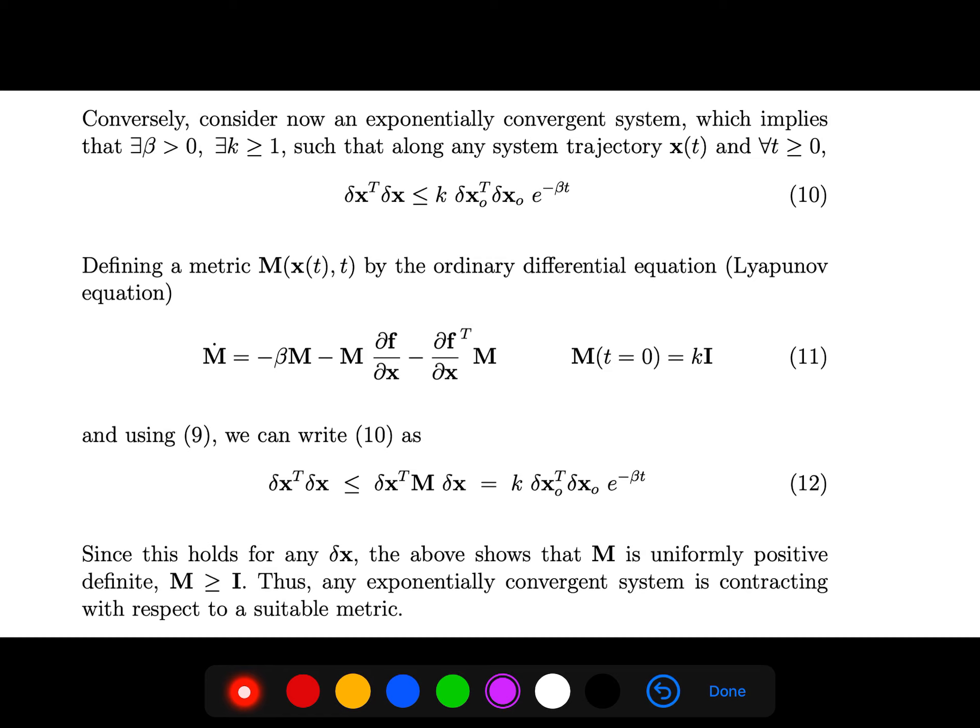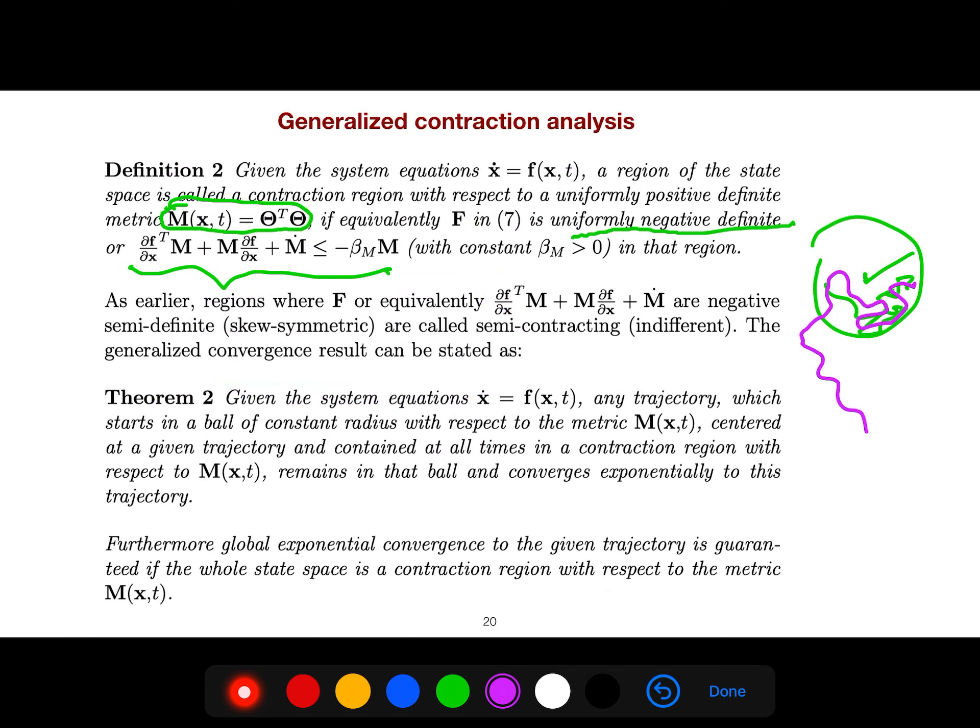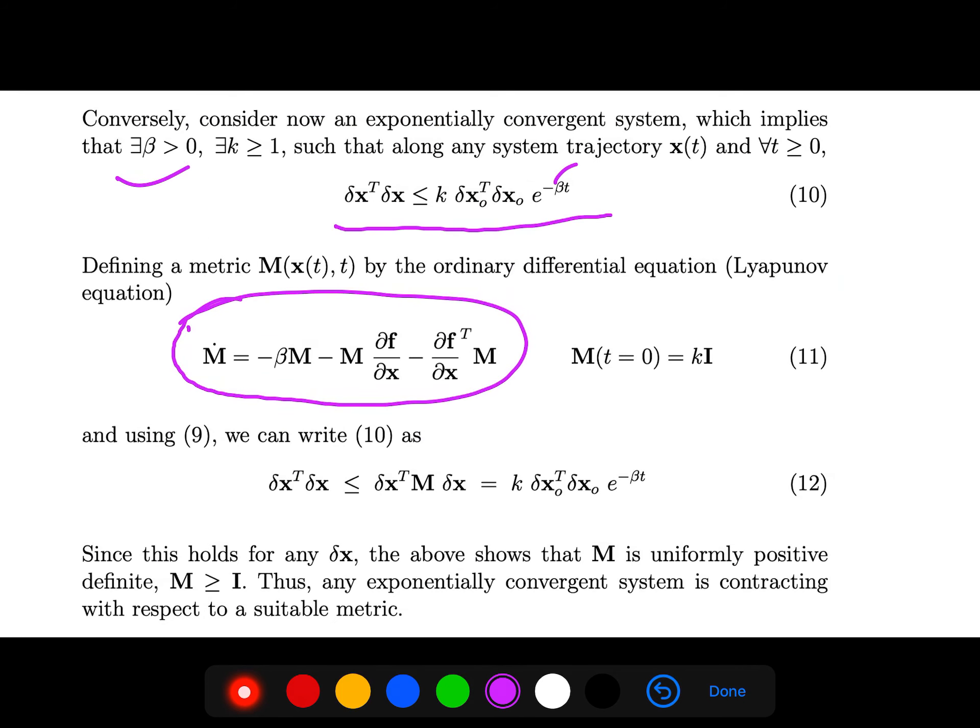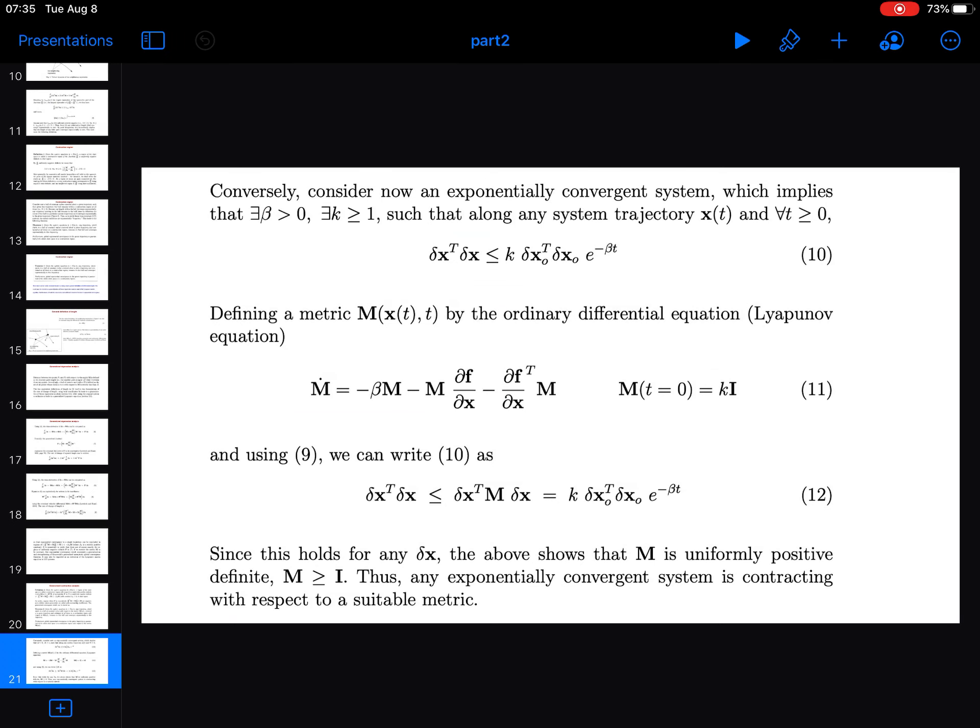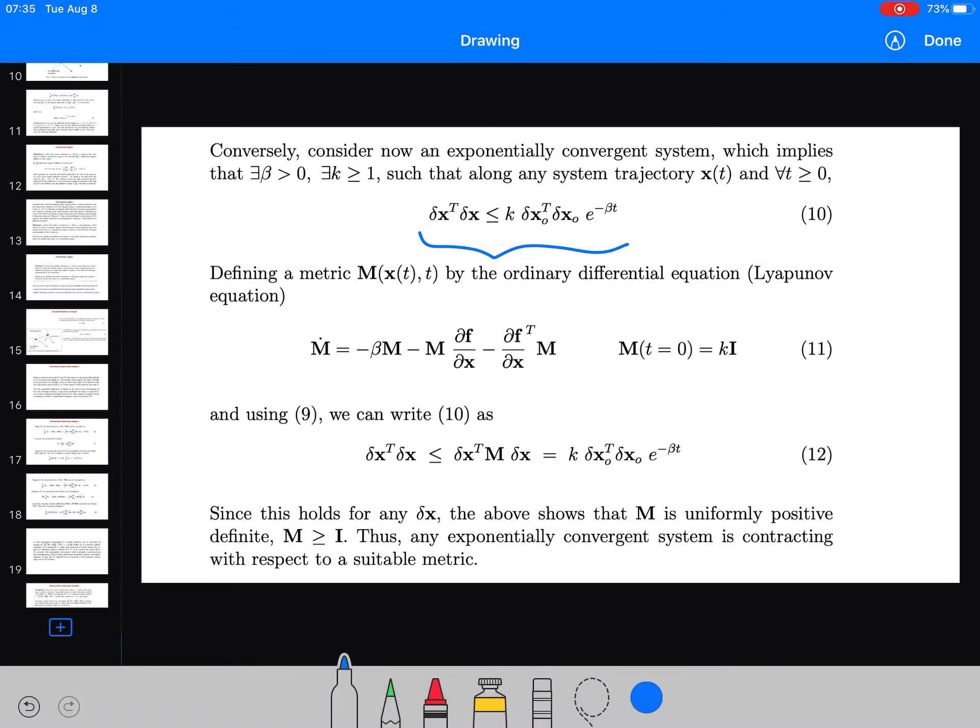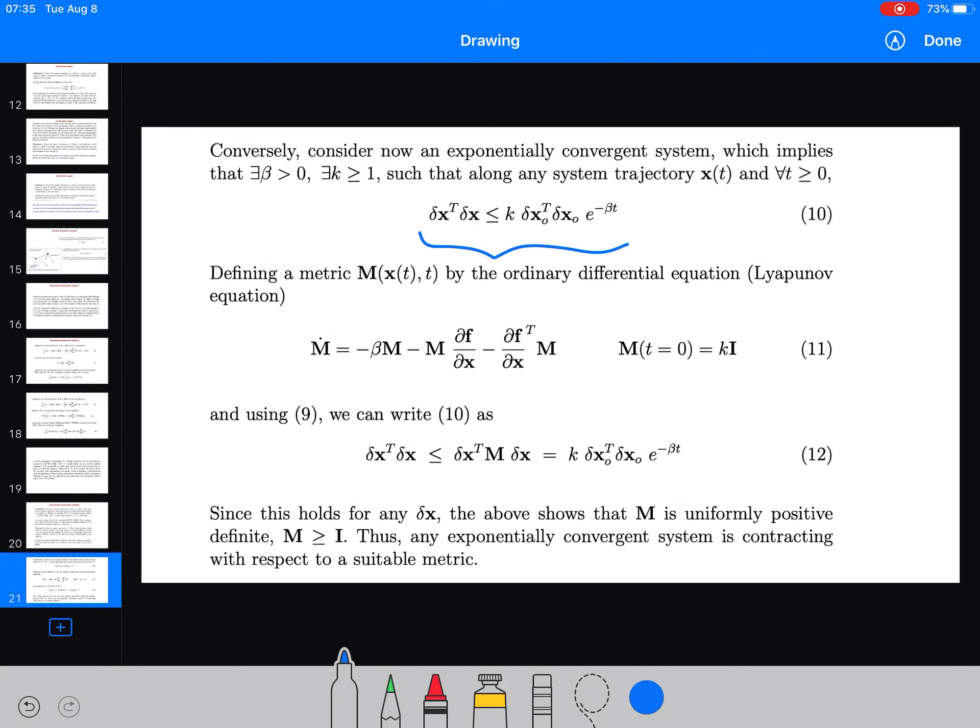Consider now an exponentially convergent system which implies that there exists a beta such that along any system trajectory your displacement rate is like this, it is upper bounded by this. And now defining a metric M by the ordinary differential equation, we call it Lyapunov equation, and we can say we can write this as this. So this holds for any displacement and it shows that M is uniformly positive with respect to a suitable metric.